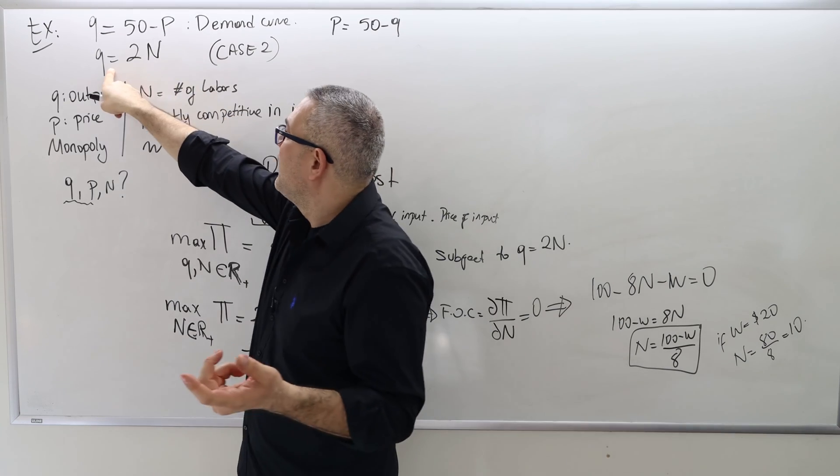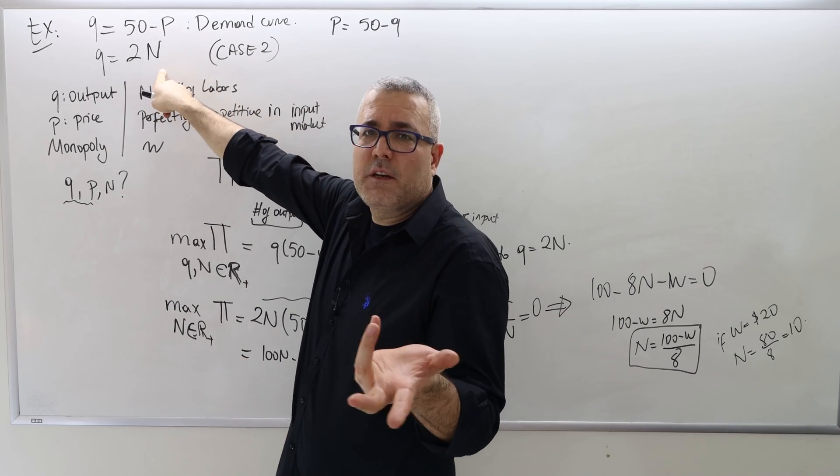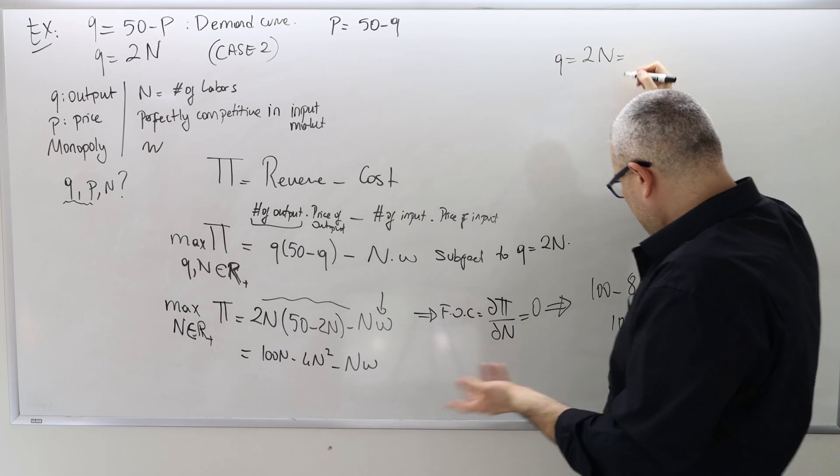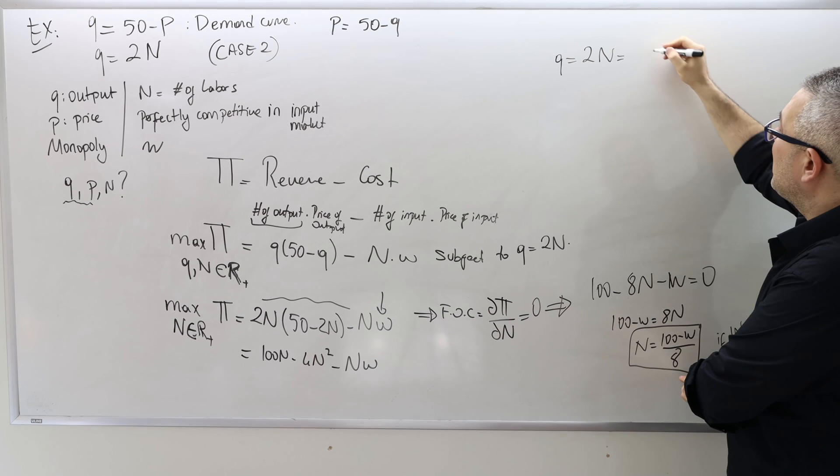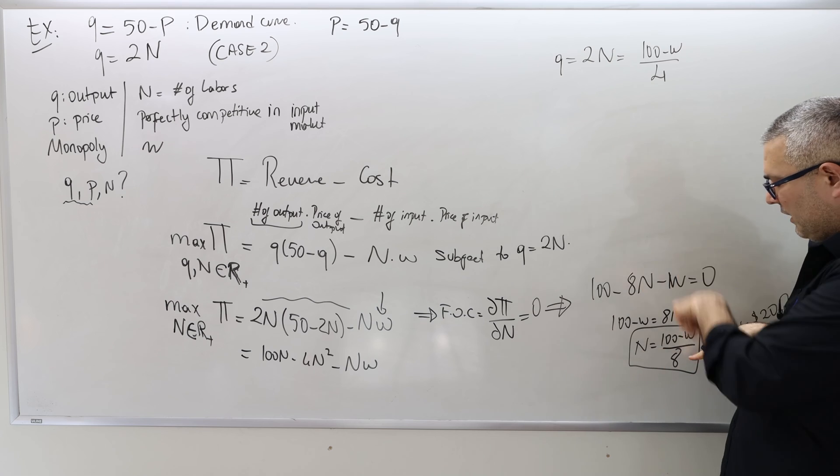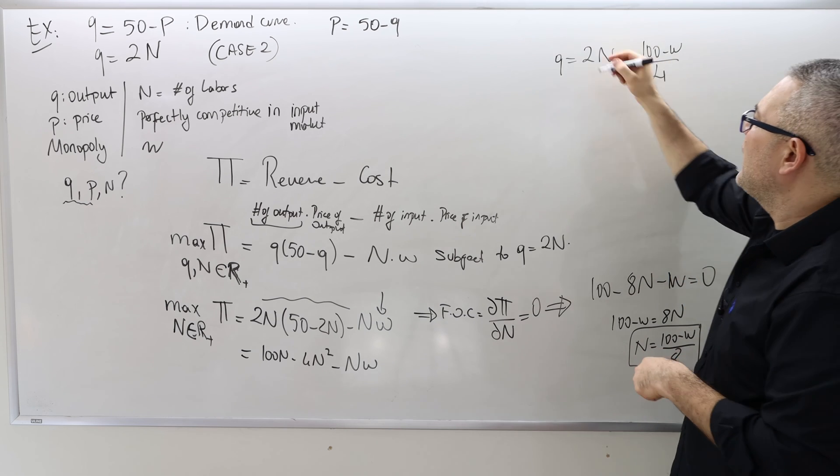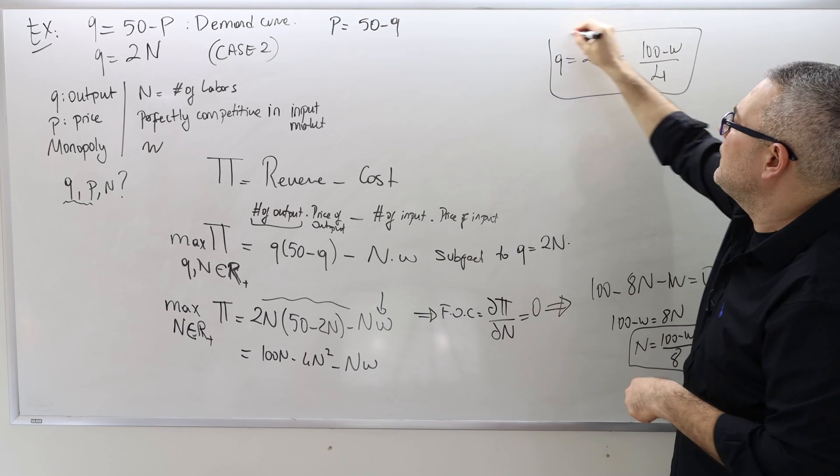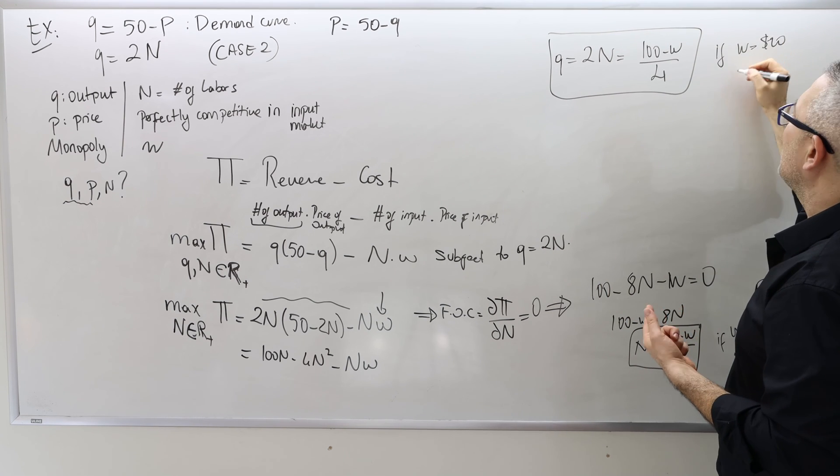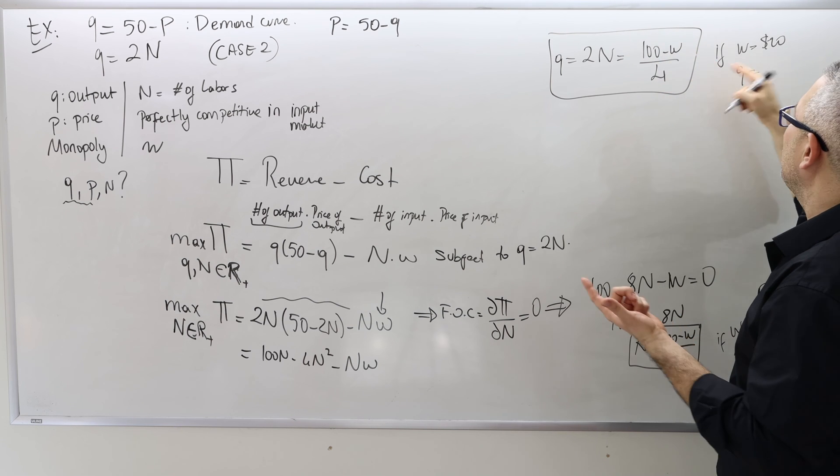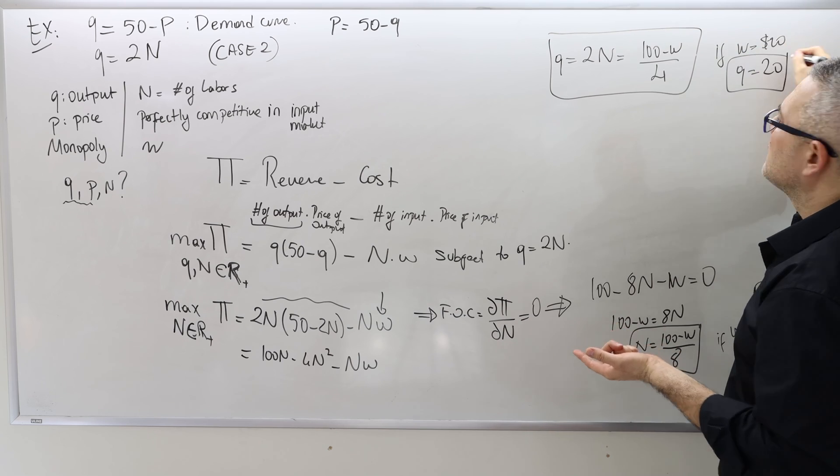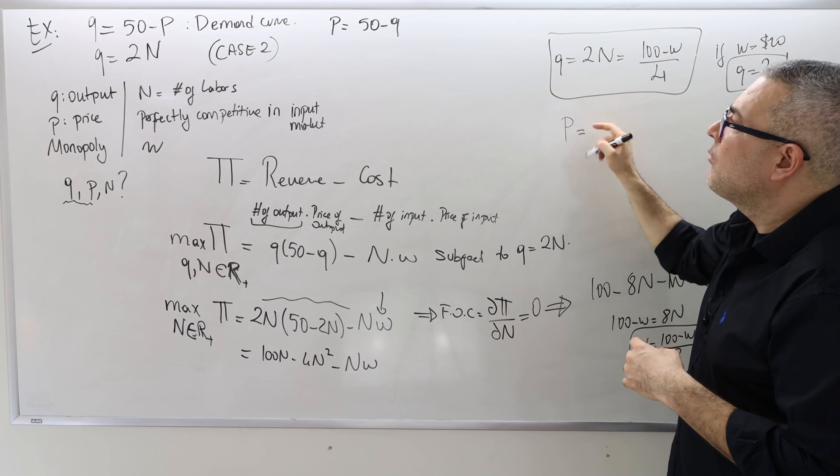So let's find everything as a function of W. So once I find the number of labor, how can I find the quantity and the price? Well, simple. In order to find quantity, use the production function. So therefore, Q equals 2N, which means 2 times this fellow, 100 minus W divided by 4, because 2 times 8, 4. So that's the Q. That's it. So if W, for example, is $20, well, then Q is going to be 100 minus 20, 80 divided by 4, 20.